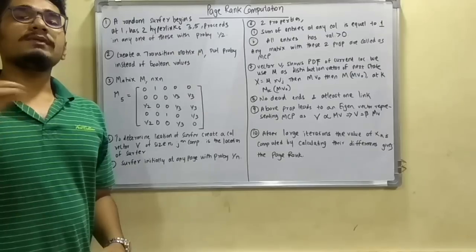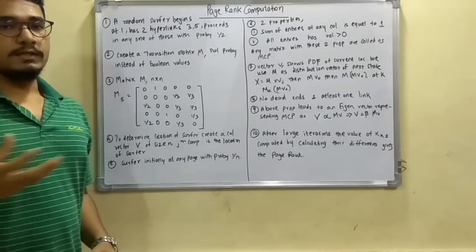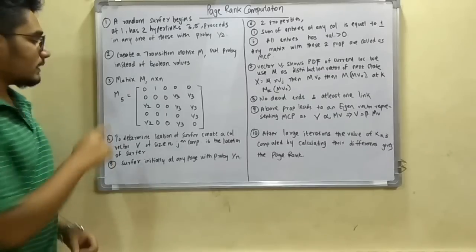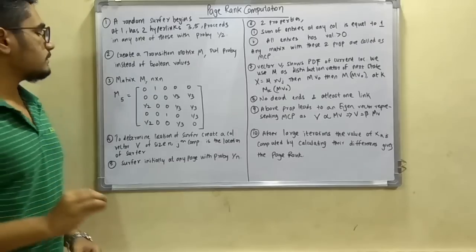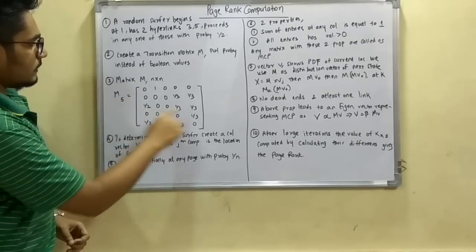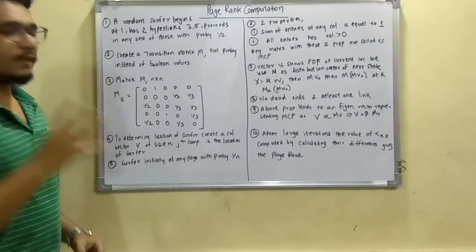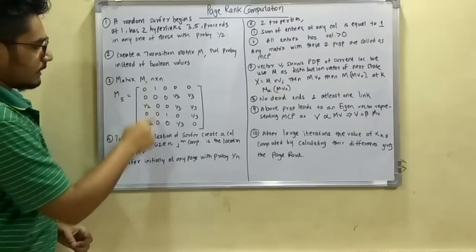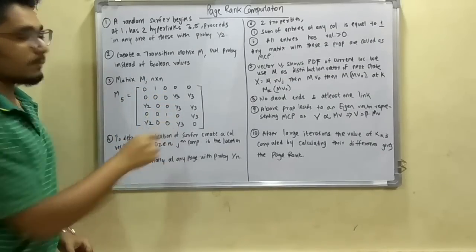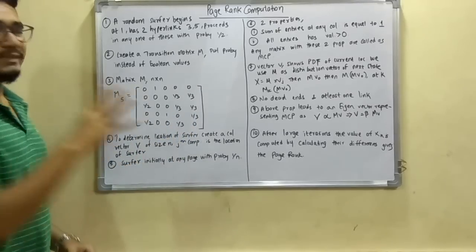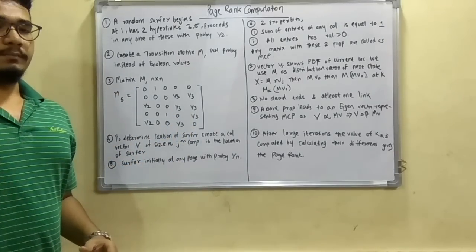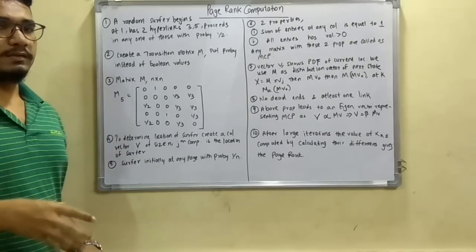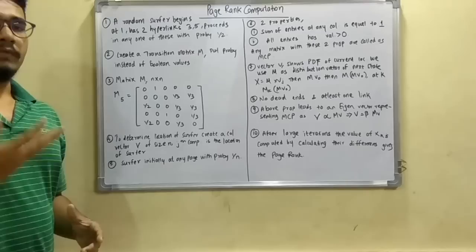We fill this transition matrix with the probability values that the surfer can traverse along. We create a transition matrix M of N rows and N columns. Here it is represented as M5, meaning positions 1, 2, 3, 4, 5. One property of this transition matrix is that all columns should sum to 1 — for example, half plus half equals 1, and 1/3 plus 1/3 plus 1/3 also equals 1. It is essentially a random matrix based upon the page rank, just an estimate of how the surfer will traverse.